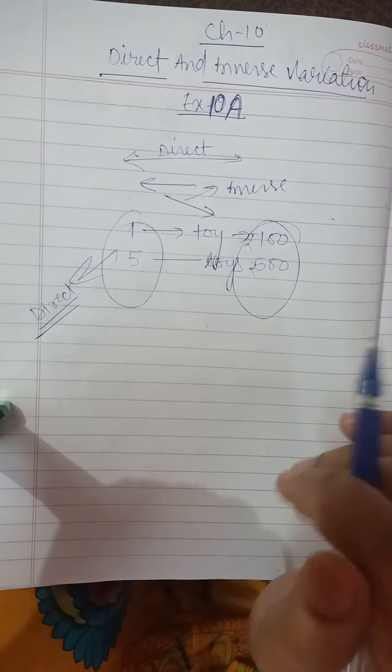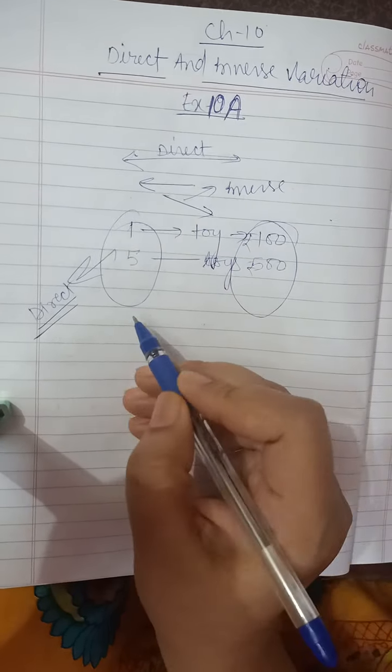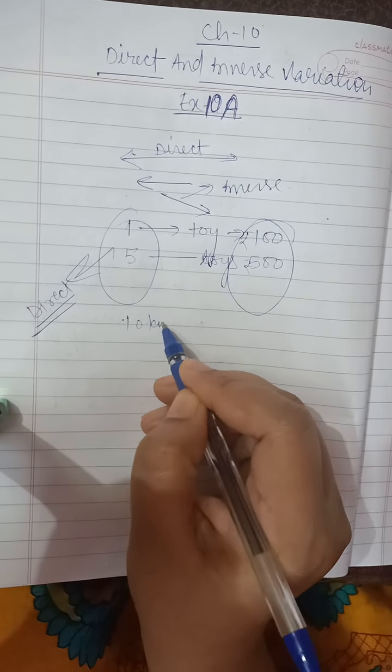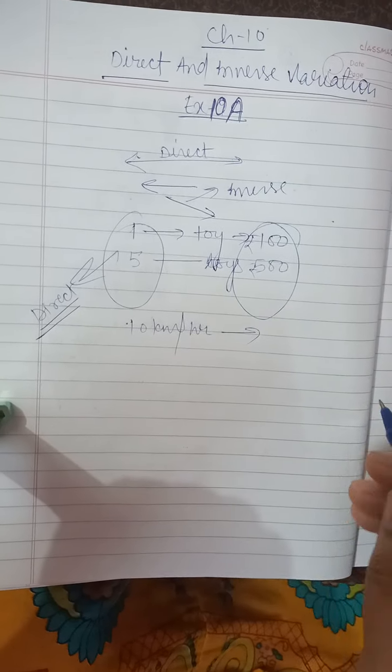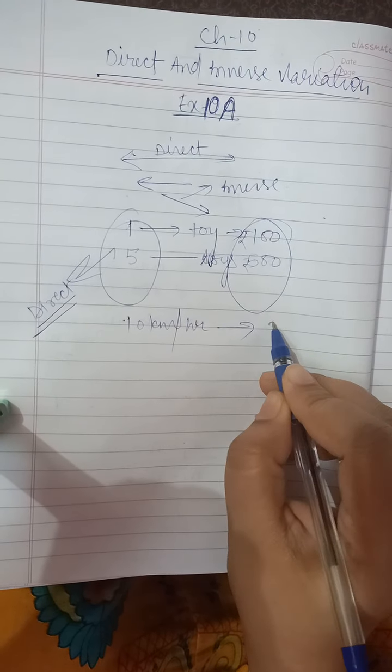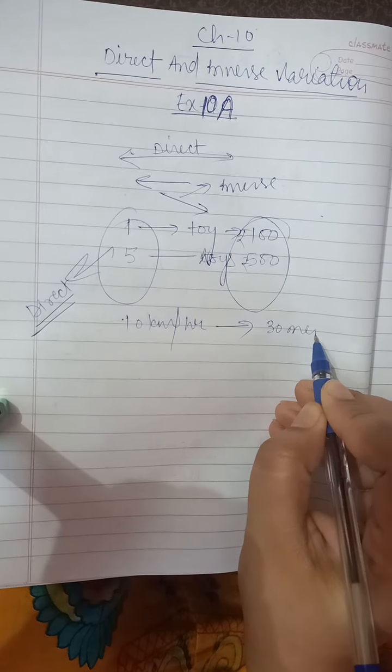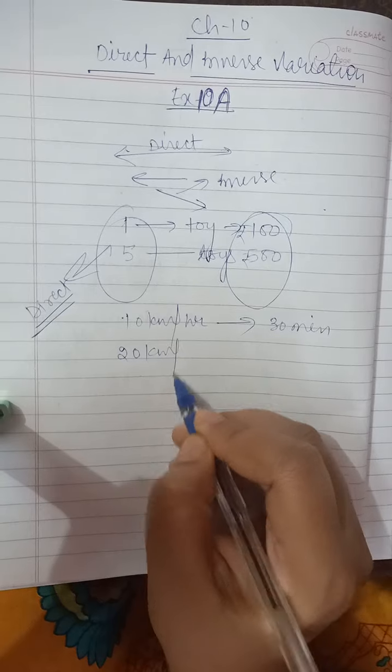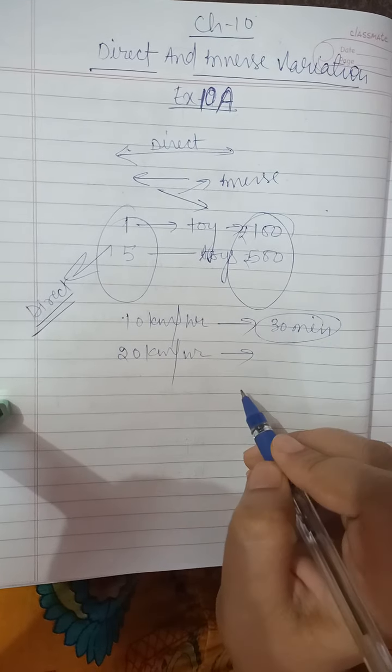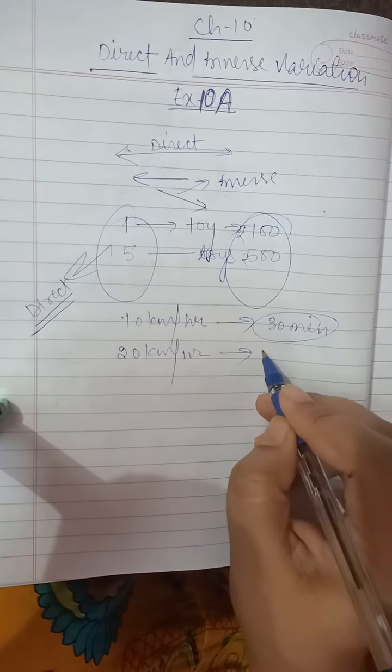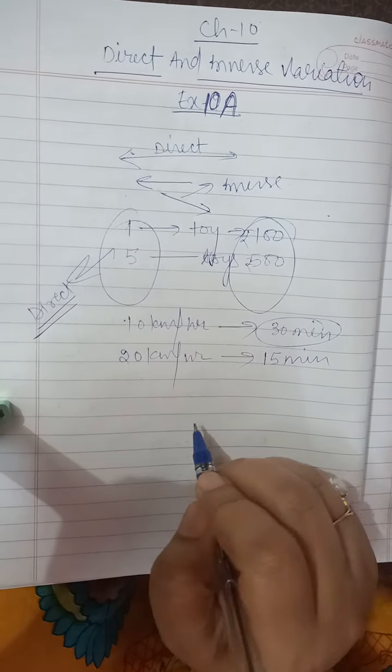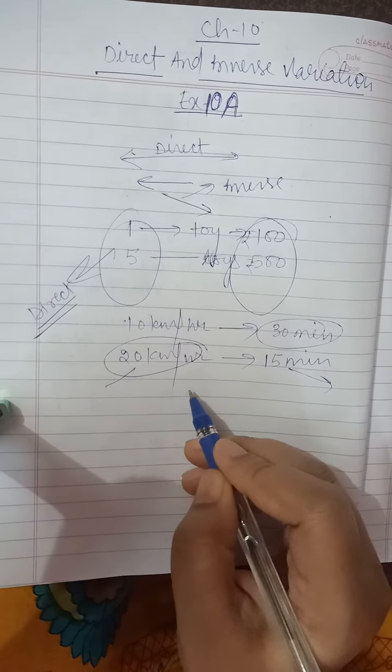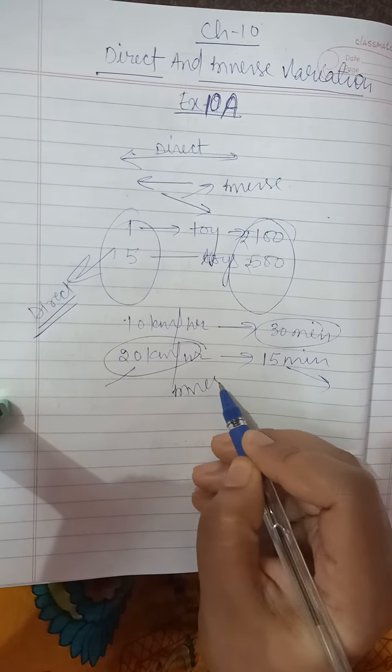Next is indirect proportion. What is indirect proportion? When we walk at the speed of 10 km per hour, we can travel a distance in 30 minutes. But when we increase it to 20 km per hour, we can cover the same distance in 15 minutes. This means when we increase the speed, the time decreases. So it is inverse variation.